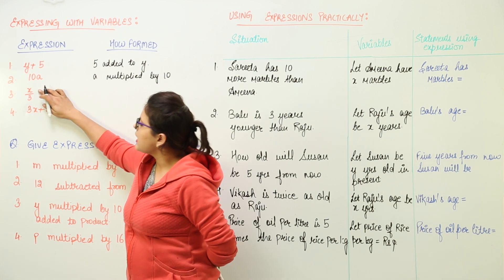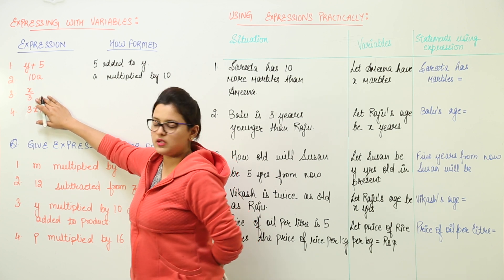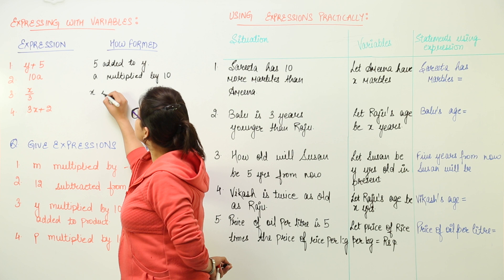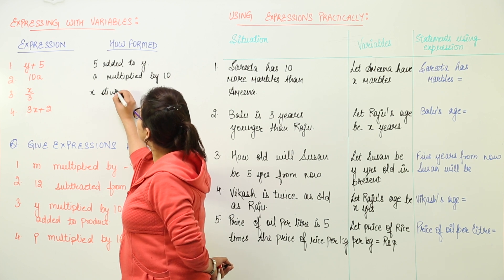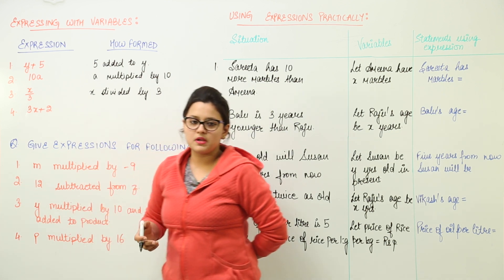Next is x upon 3. Now this would have been formed when x was divided with 3. So we write over here x divided by 3. This is how we can write down for any expression.